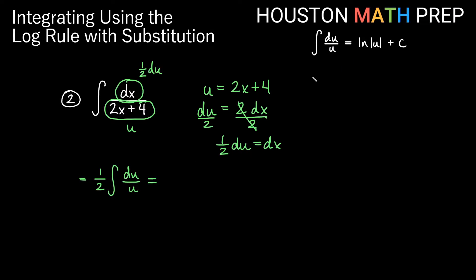And now we'll go ahead and use our log rule. So that tells us we keep the one half. We'll get ln of absolute value of u plus c. And now we just replace our u back in terms of the original variable. And so that gives us one half ln of the absolute value of 2x plus 4, all of that plus c.